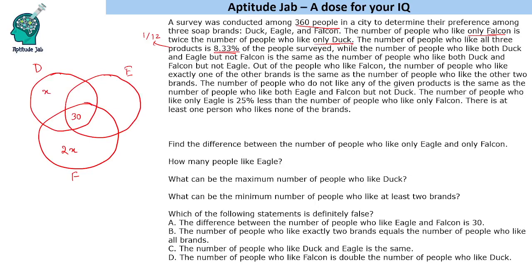The number of people who like both Duck and Eagle but not Falcon — let us say this value is Y. And the value for both Eagle and Falcon but not Duck is also equal to Y. So both these values are equal.